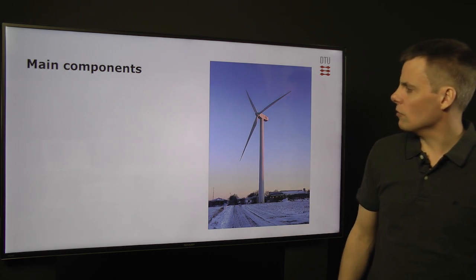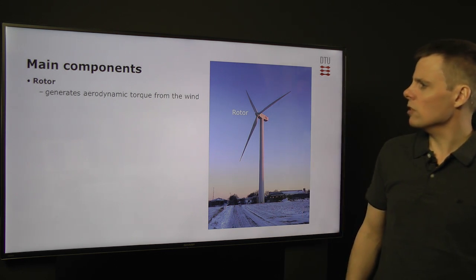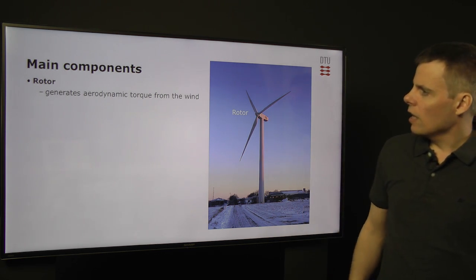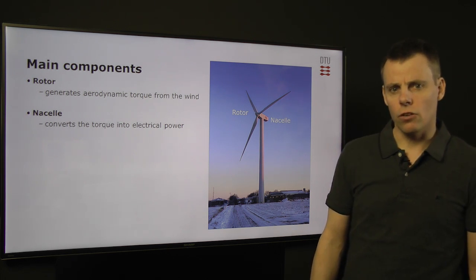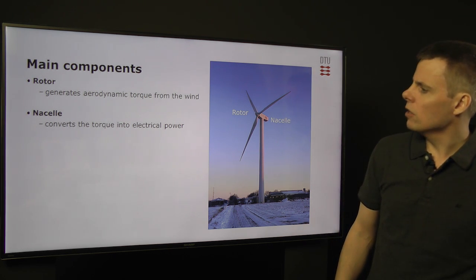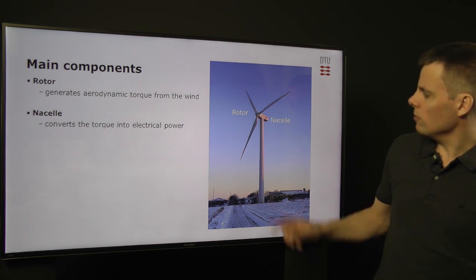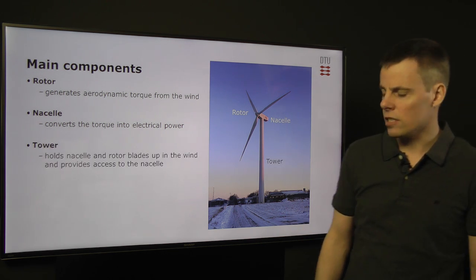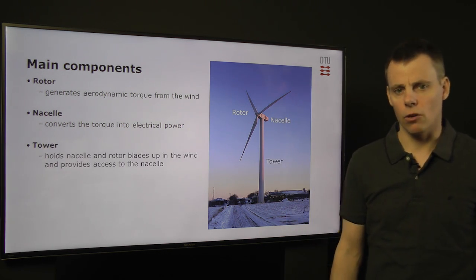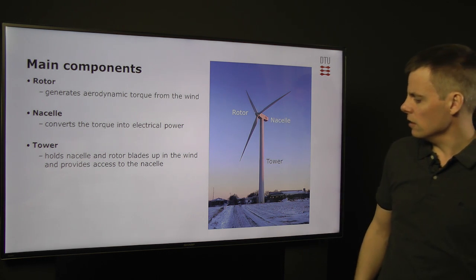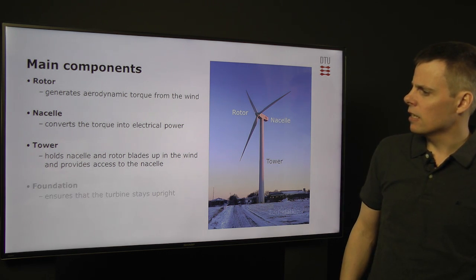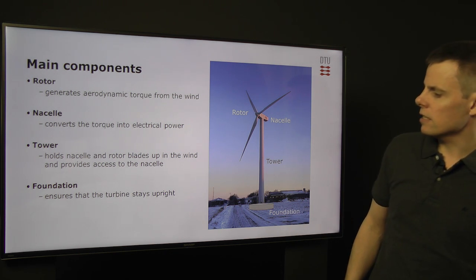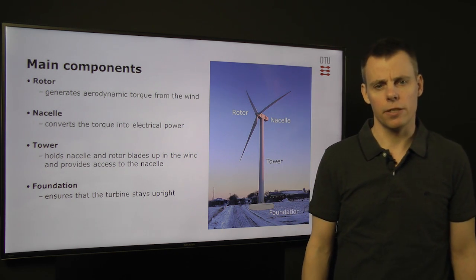The main components of the turbine is the rotor that generates the aerodynamic torque from the wind. It's the nacelle that converts the torque into electrical power. It's the tower that holds the nacelle and the rotor blades up in the wind and provides access to the nacelle for maintenance. And it's the foundation that holds the whole turbine in place and into the wind.